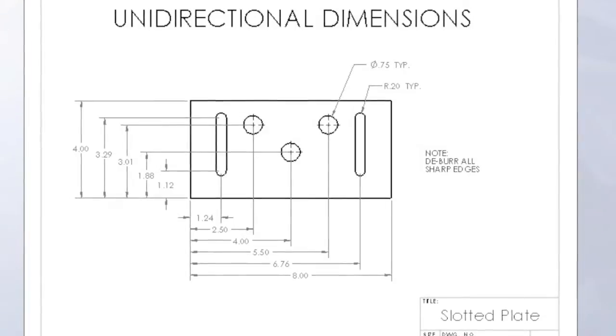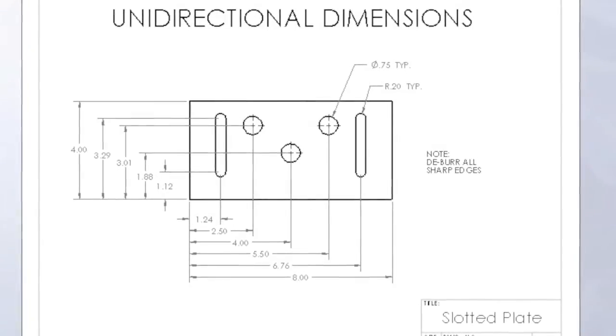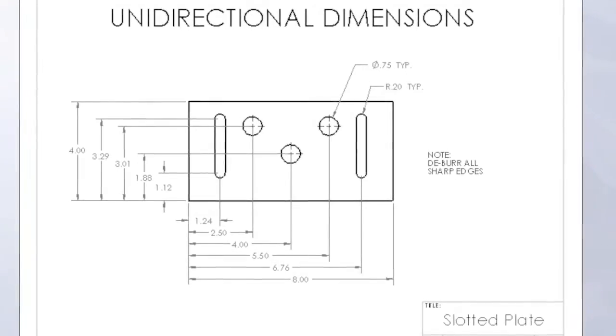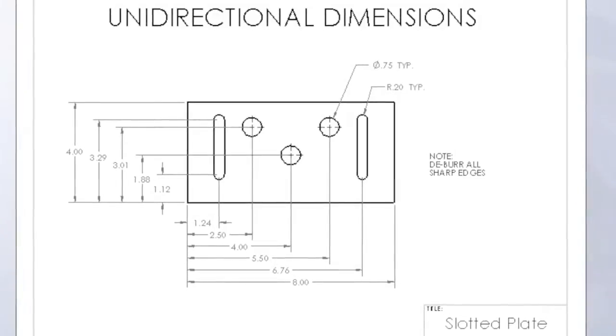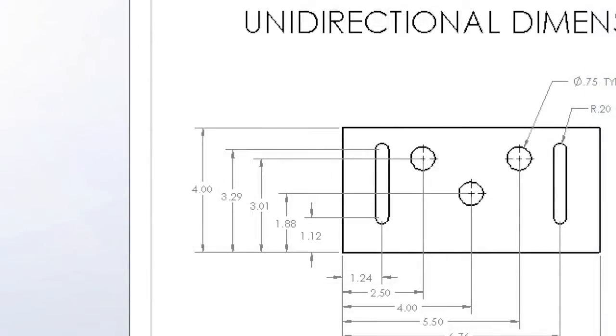Each dimension is placed where it can be read from left to right. While this makes reading easier on the print reader, vertical dimensions require more space for placement.